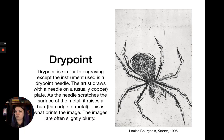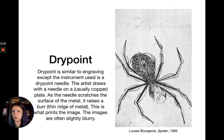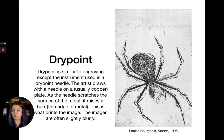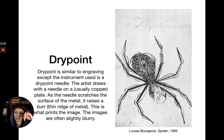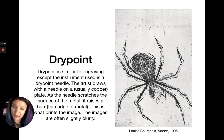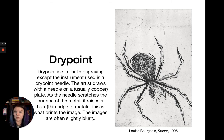Very closely related to engraving is drypoint. Drypoint is similar to engraving except the instrument used is a drypoint needle—literally a fine, fine-tipped needle. The artist draws with the needle on a plate, usually copper because it's soft and easier to carve into. As the needle scratches the metal surface, it raises a burr, and it's this burr—not just the groove—that holds the ink and prints the image. This gives images a slightly blurrier, sketchier texture that many artists prefer for its more expressive quality.